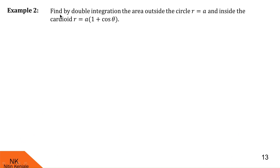Now let us proceed to the second example. Here we are asked to find by double integration the area outside the circle r = a and inside the cardioid r = a(1 + cosθ). For those unfamiliar with the cardioid figure r = a(1 + cosθ), I would suggest watching my video on rectification of curves, the link of which is given in the description box, where I have described how these cardioids look.